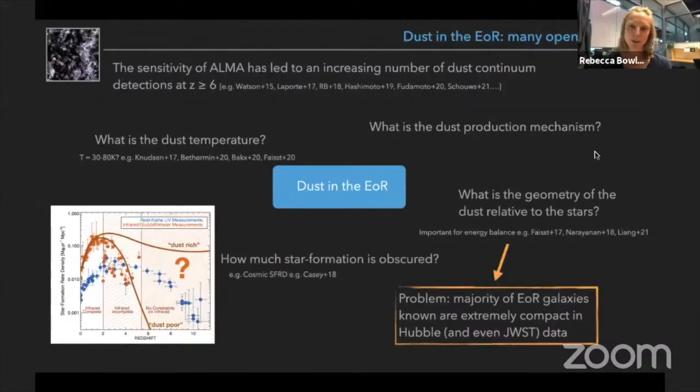So as I have the privilege of being the first speaker, I thought I would motivate my talk by giving an overview of some of the many open questions we have about dust in the epoch of reionization, and this is all built on the back of this new regime of detecting very high redshift galaxies using the power of ALMA, which has led to an increasing number of dust continuum detections at redshifts greater than six.